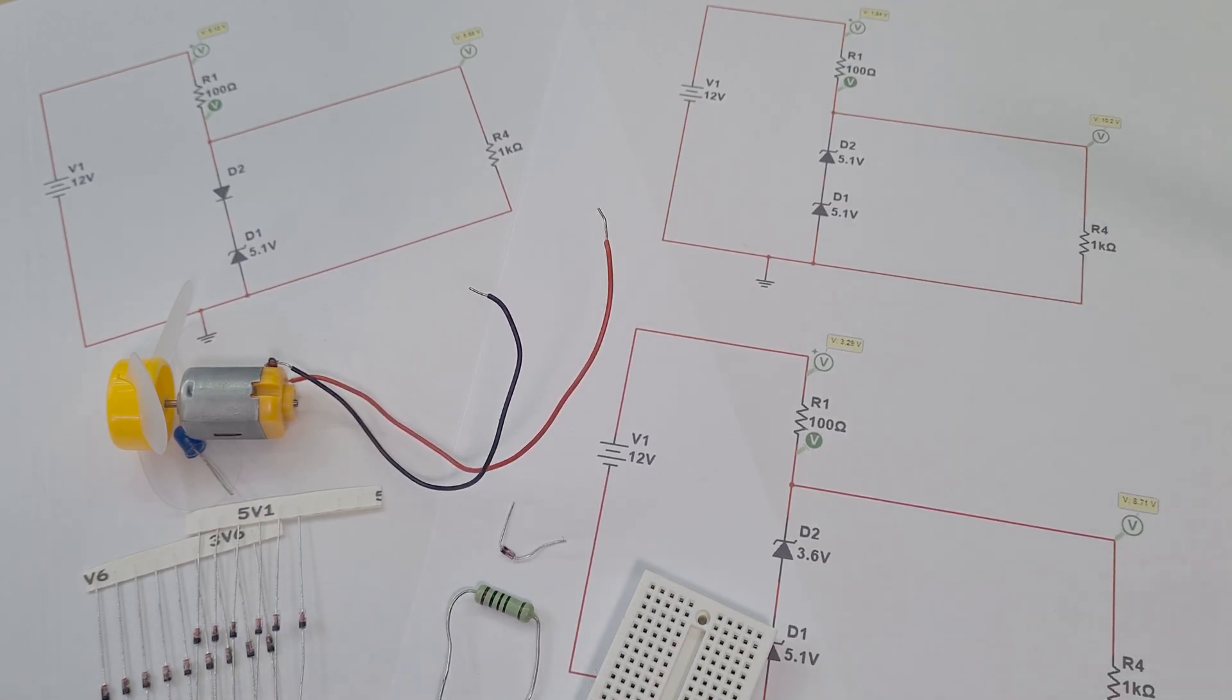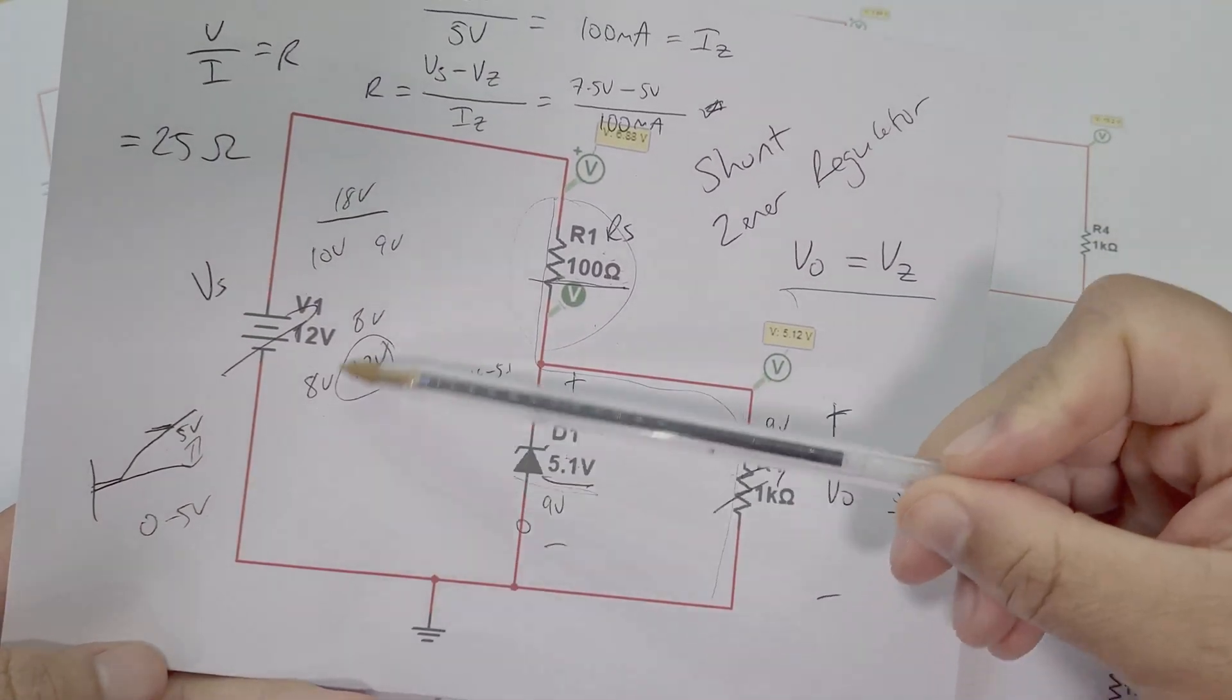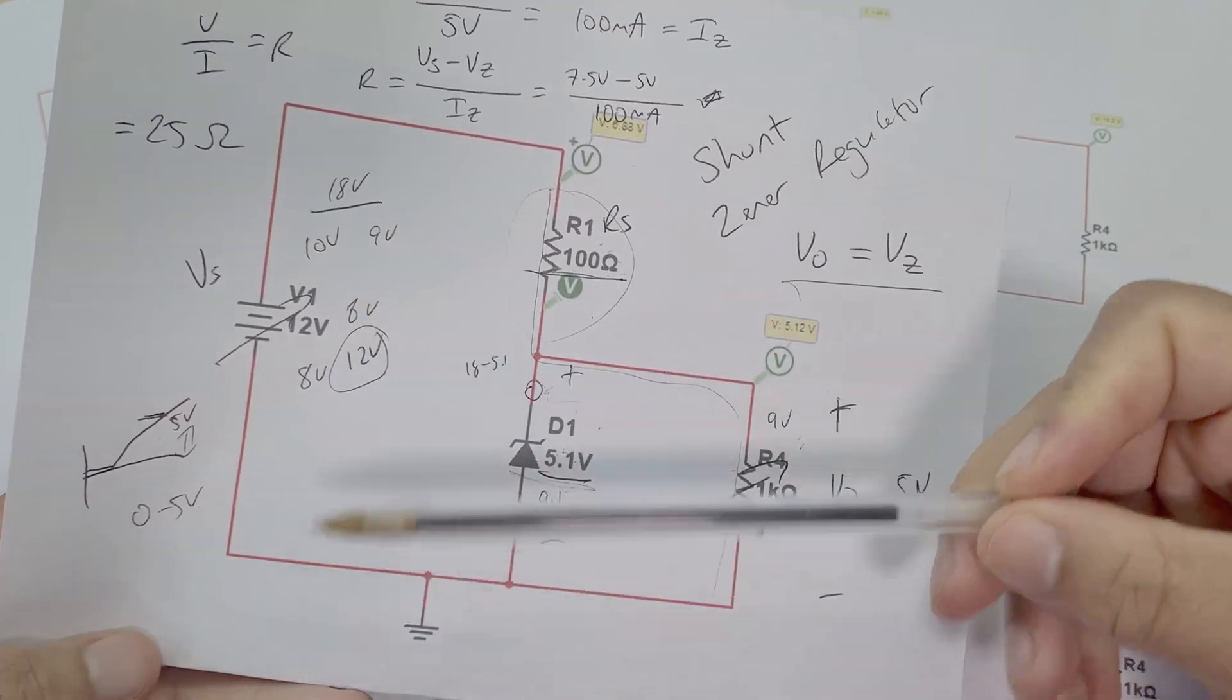So in my last video, we made a Zener shunt voltage regulator, which is pretty basic. It takes a high voltage input here. So let's say 12 volts, 18 volts, 9 volts, whatever.